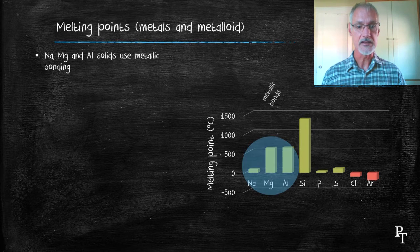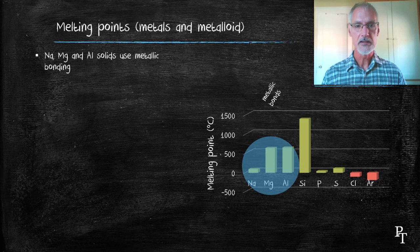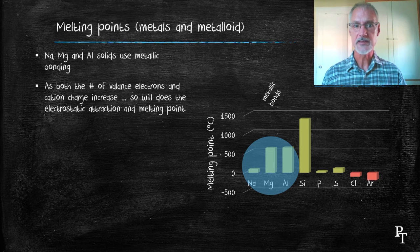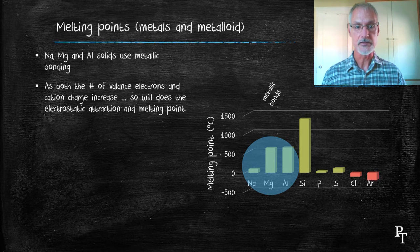The first three elements are all metallic in nature, and as a result, they bond using the metallic bond. You might recall some of the factors that affect the metallic bond involve the number of valence electrons, the cation charge, and the radius.